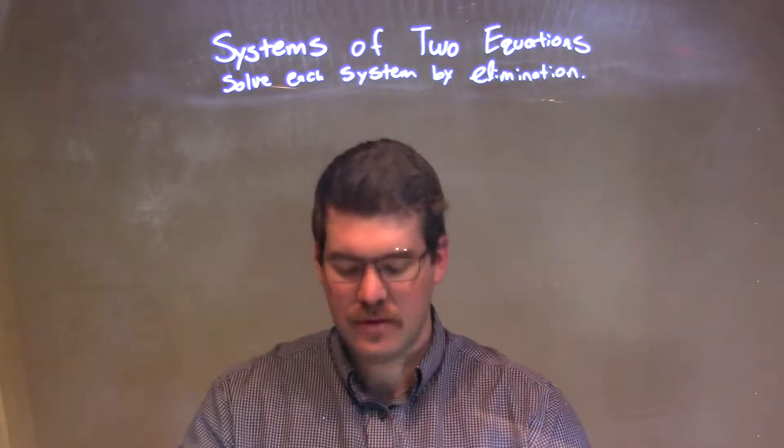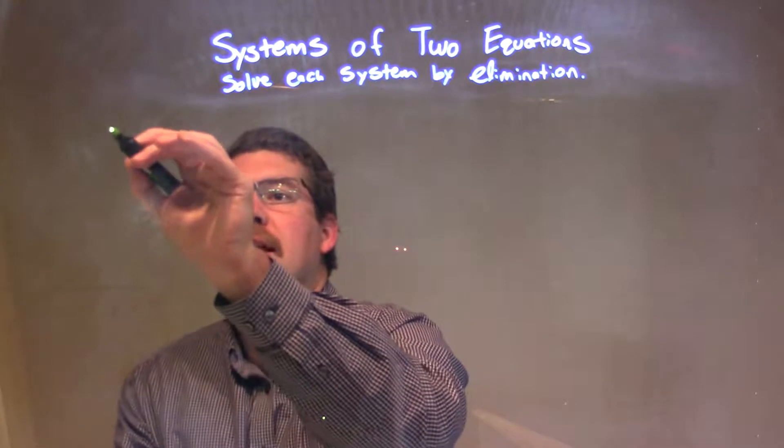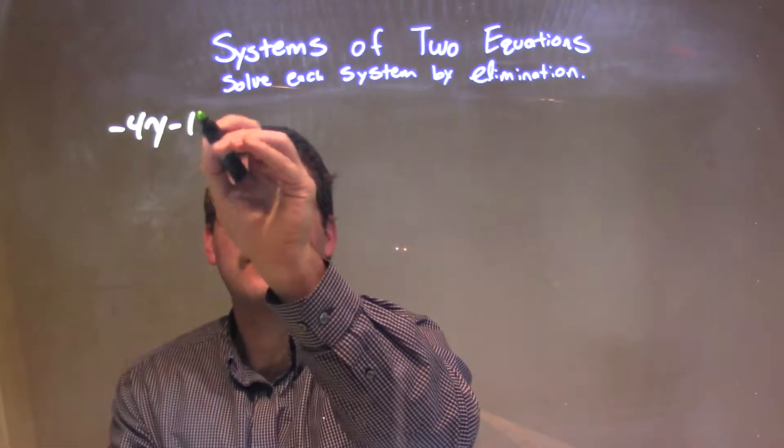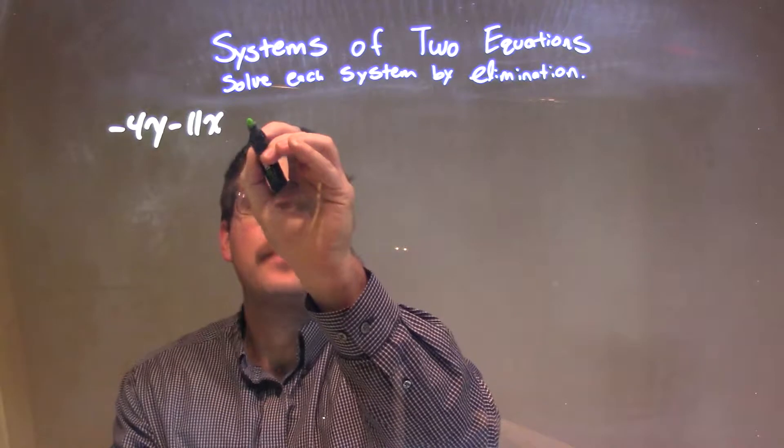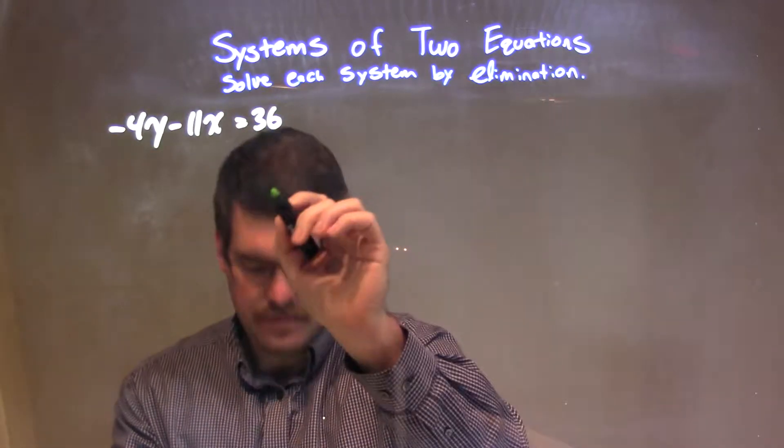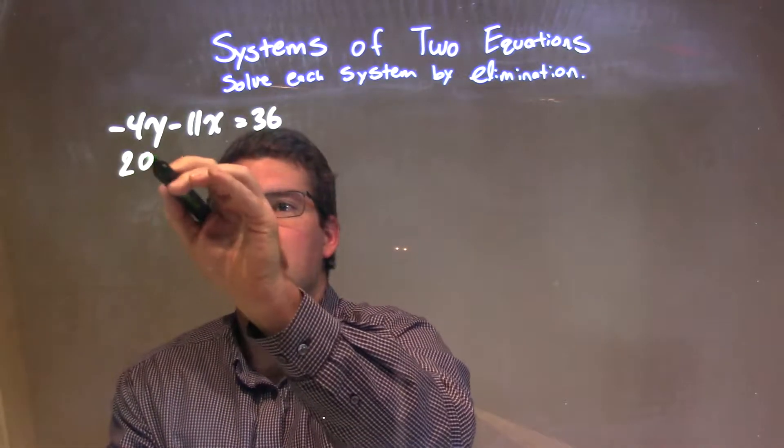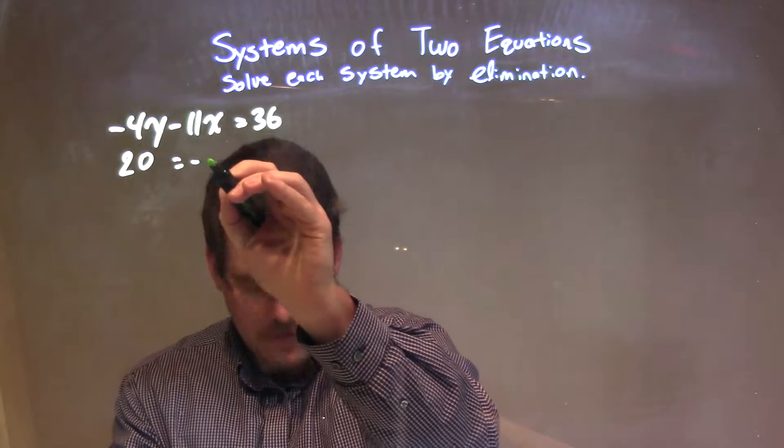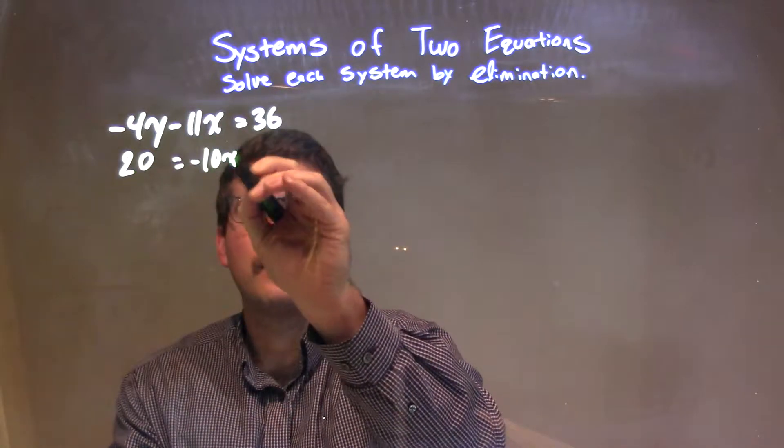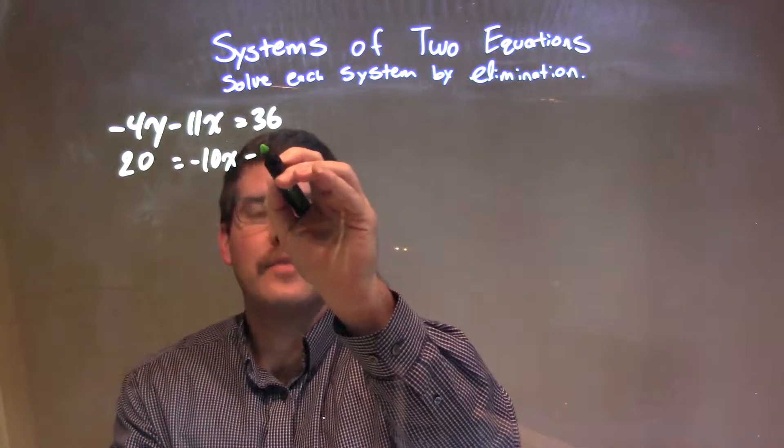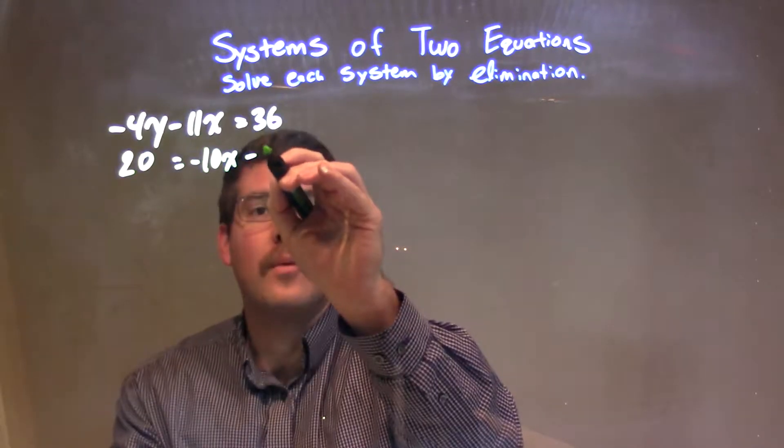If I was given the system negative 4y minus 11x equals 36, and 20 equals negative 10x minus 10y.